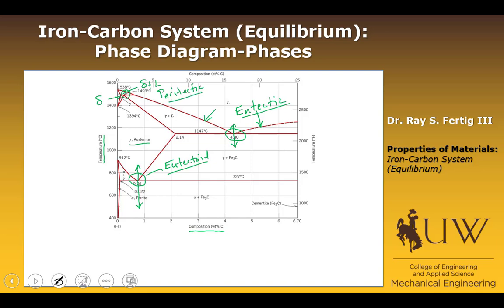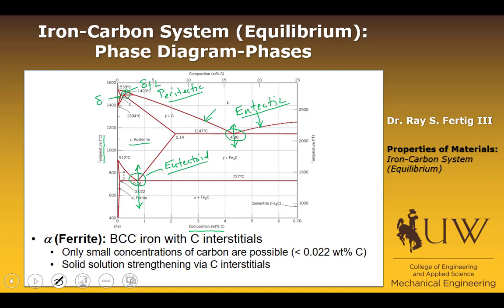So we see all of the reaction types that we talked about in previous lectures. Now I want to highlight some of the important phases. The first phase is the alpha, or ferrite phase. The alpha phase is really near the extreme low carbon concentration — it's a little triangular region. It can only exist at maximum up to 0.022 weight percent carbon, so only very small concentrations are possible. It has a BCC structure, and the carbon exists as interstitials within that structure, which leads to solid solution strengthening.